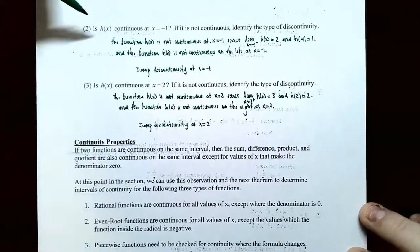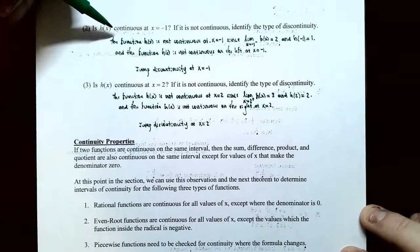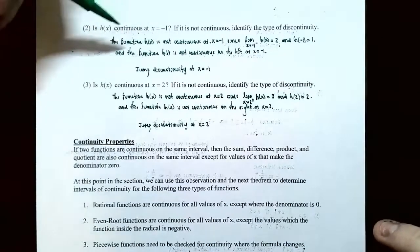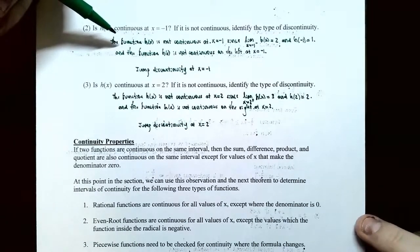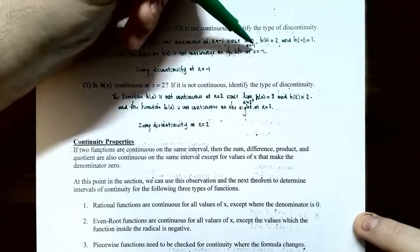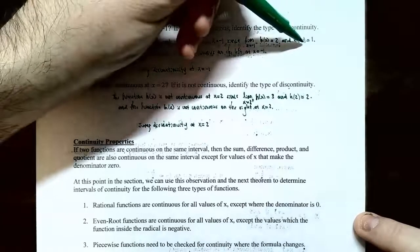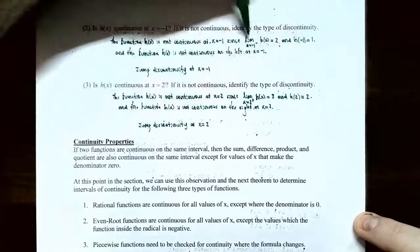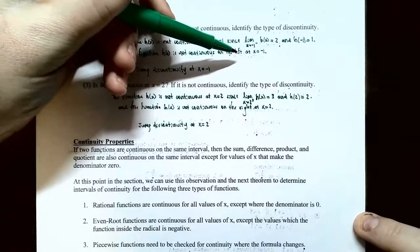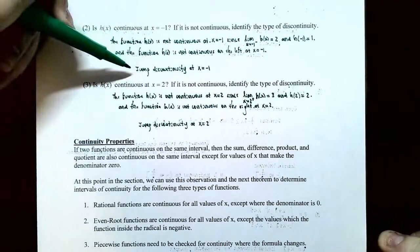Step 3: Check continuity on the left at x equals 2. The limit as x approaches 2 from the left is 2, since |2| = 2, and h(2) = |2| = 2. These are equal, so the function is continuous on the left at x equals 2. Since all three conditions are satisfied, h(x) is continuous on the closed interval [−1, 2].